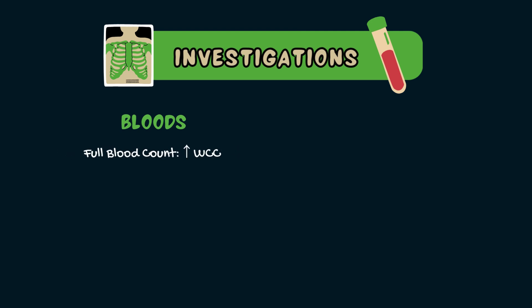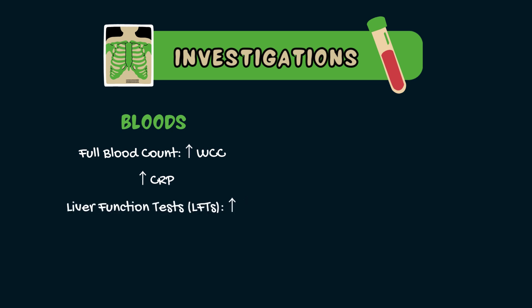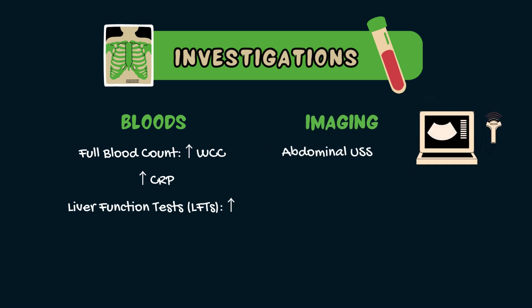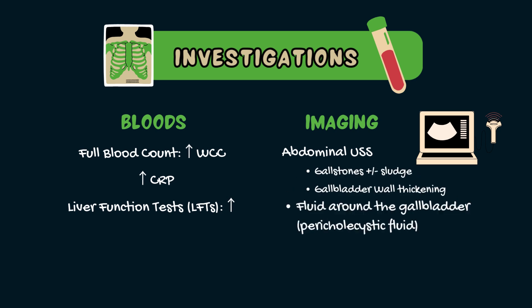So when cholecystitis is suspected, here's how we confirm it using investigations. Blood tests may show an elevated white cell count and an elevated C-reactive protein. The liver function tests may also be mildly deranged, especially if the common bile duct is involved. On imaging, an abdominal ultrasound is the first-line investigation. Findings suggestive of acute cholecystitis include the presence of gallstones or sludge, gallbladder wall thickening, and fluid around the gallbladder, also known as pericholecystic fluid.